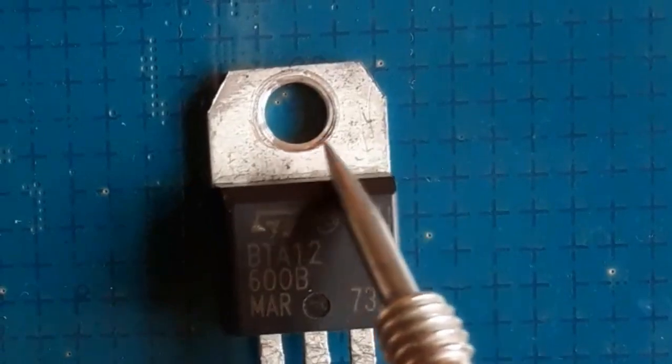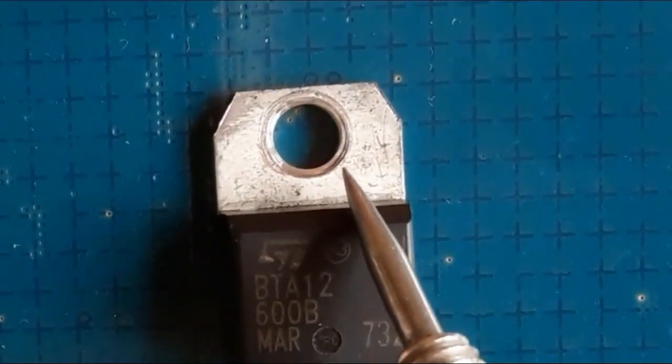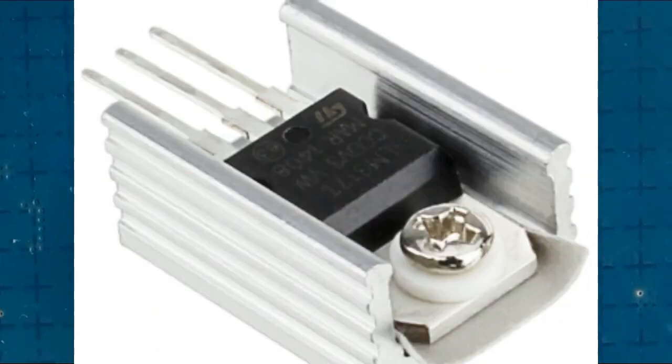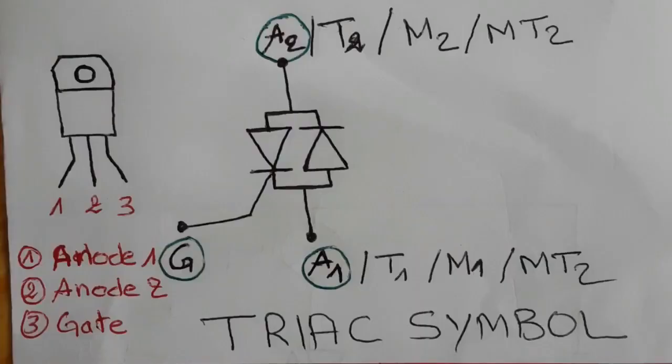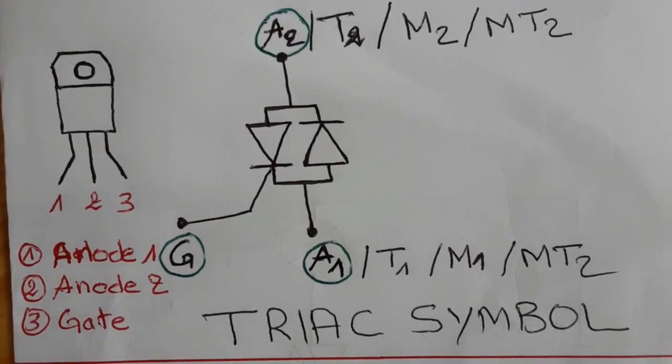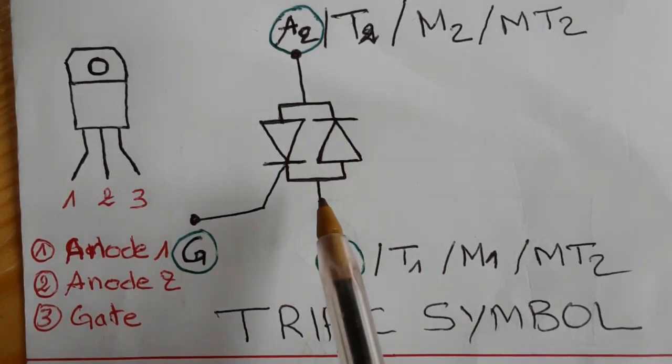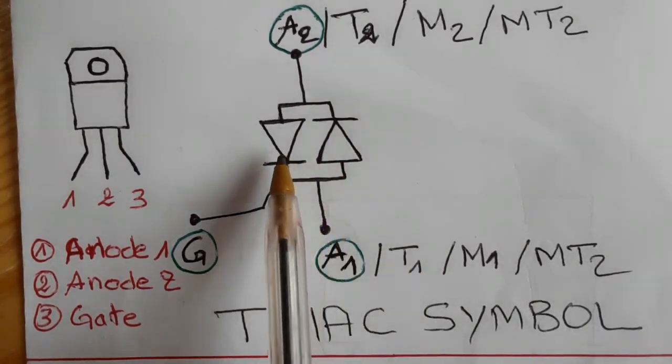Here, this part is used to connect the TRIAC with the heatsink because the TRIAC gets hot when working. So, basically, before testing the TRIAC using the multimeter, I'm going first to show you all about the TRIAC symbols.